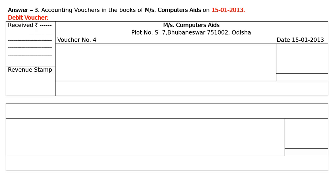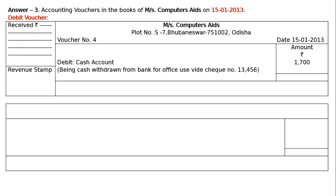You have to write down the amount with rupee symbol. The transaction is: withdraw cash from bank for office use — you are getting cash, cash is an asset, cash is increasing. According to modern method increase in cash is debited, and according to traditional method debit what comes in. Hence debit cash account, amount will be rupees 1,700 in the amount column. Now you have to write down in the narration explaining this debiting of cash — that is, being cash withdrawn from bank for office use, vide cheque number 13456, and the amount column total is rupees 1,700.